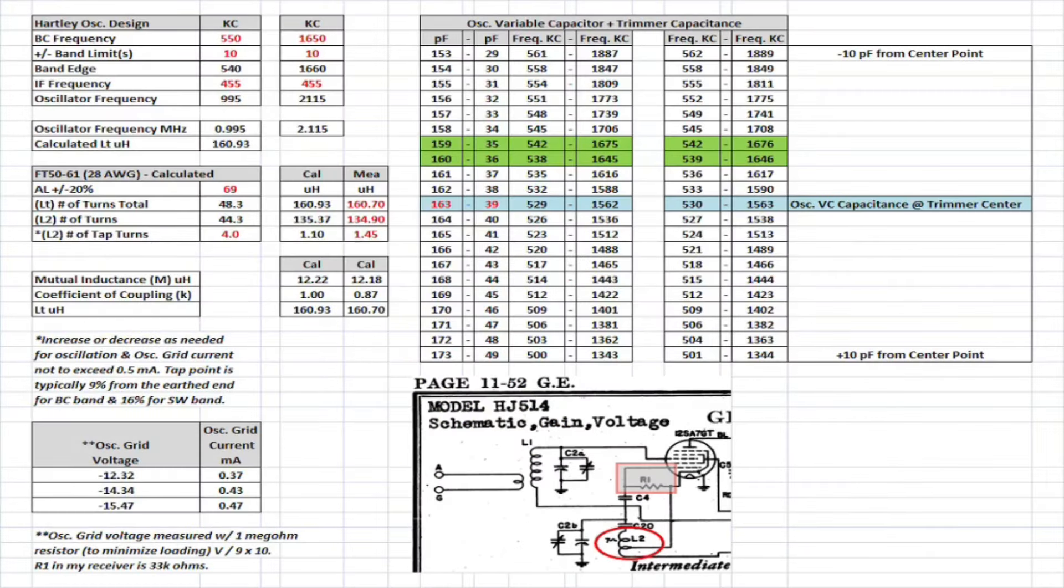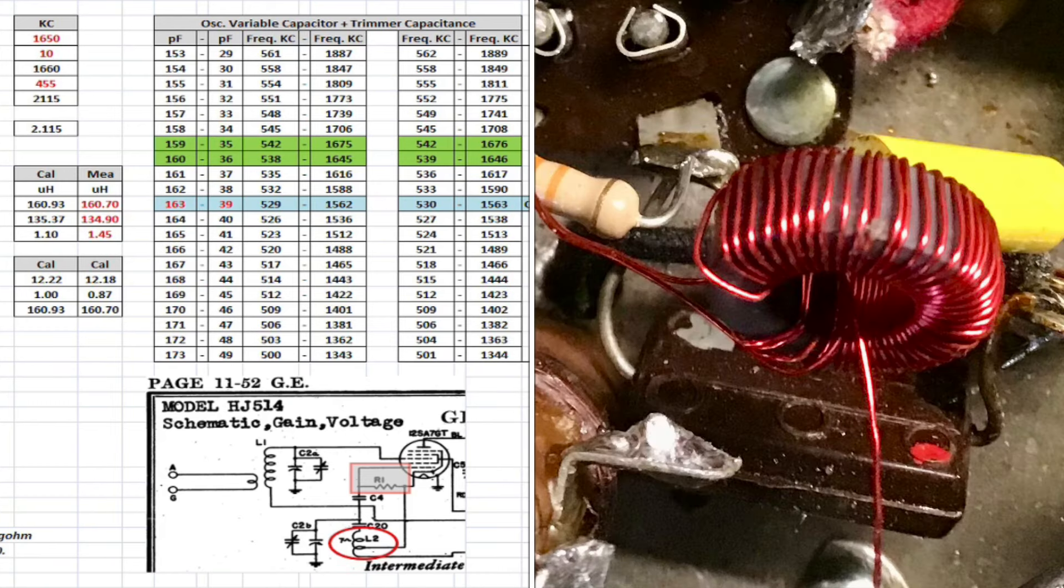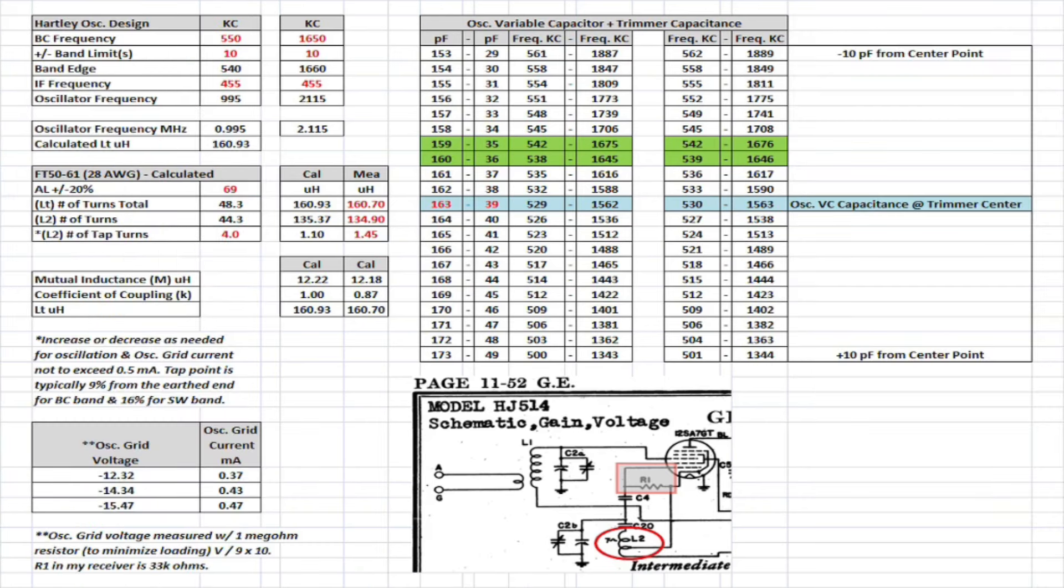Hi folks, and thanks for joining in. My previous video I was doing some fine-tuning on the antenna section of the GE radio, model HJ514. I also made note of an oscillator coil that I was building as well, and here's the design.